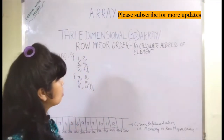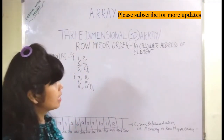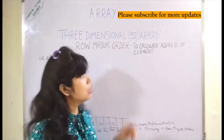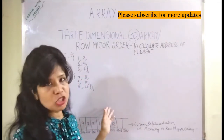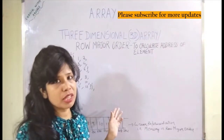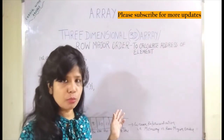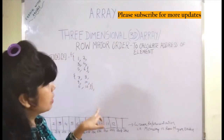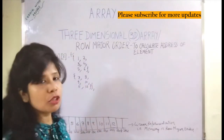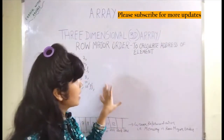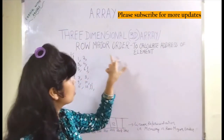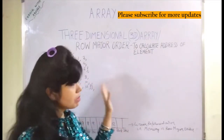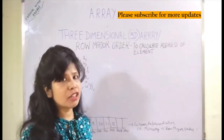There are two ways to do this: row major order as well as column major order. We have covered this for two-dimensional arrays using both row major and column major order. Here we will be covering the three-dimensional array for the row major order. We know that C language by default uses row major order to represent elements in linear form.